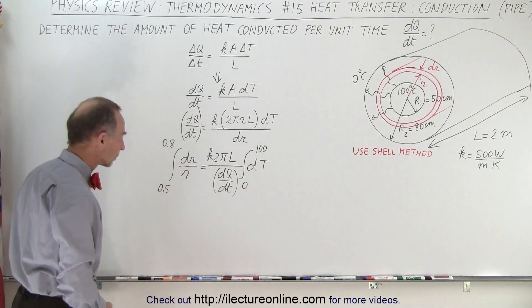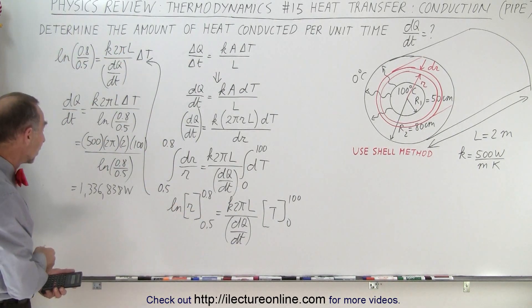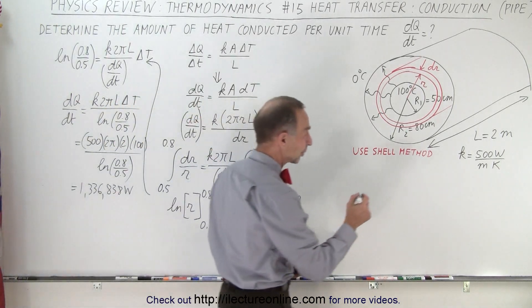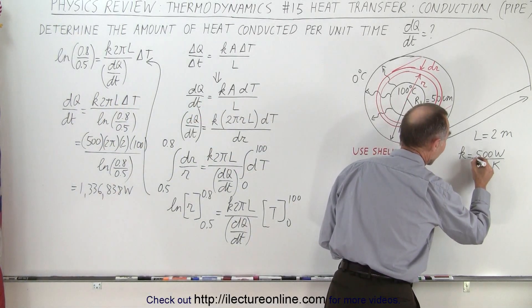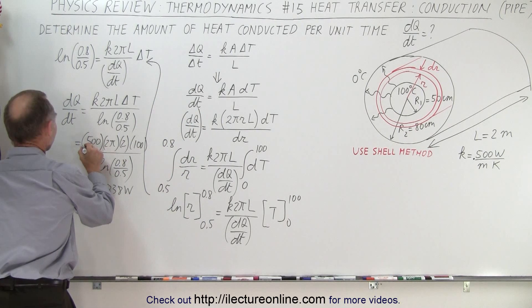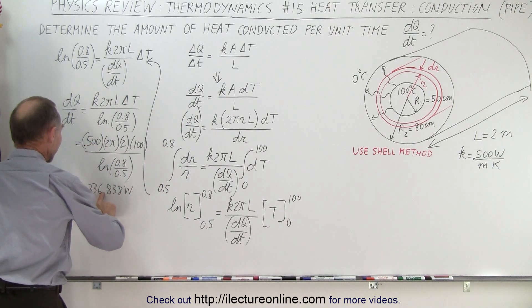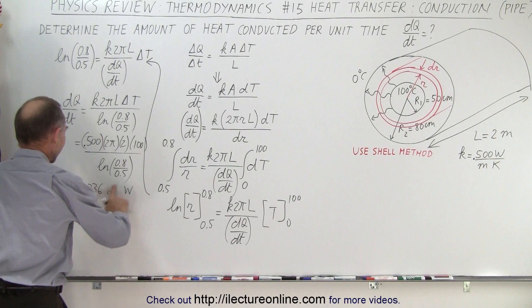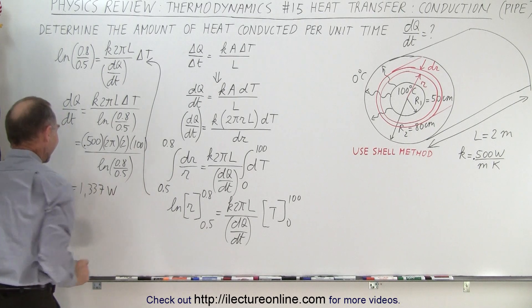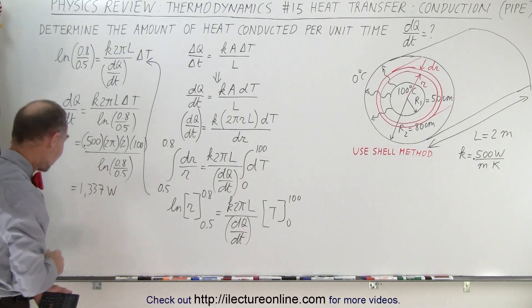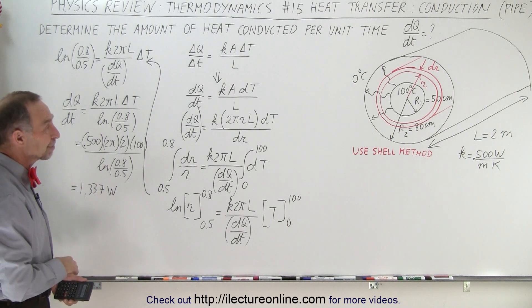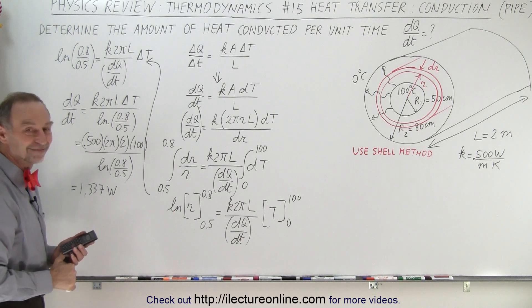That's an enormous heat loss because we used insulation that's not really insulation. Let's cheat and make this 0.500 watts per m·K instead of 500, and make this 0.5. Then we get a more realistic result: 1,337 watts through a two-meter section of the pipe. So what does it mean to have that much heat loss?